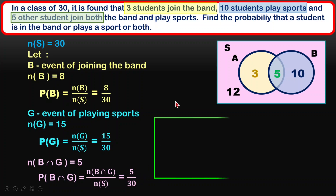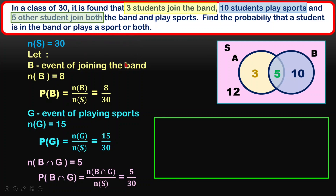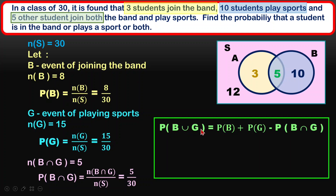Let's finish up the question. We want P(B∪G): probability of B plus probability of G minus the intersection. We put in the details we have and calculate. These are cases where events are not mutually exclusive.